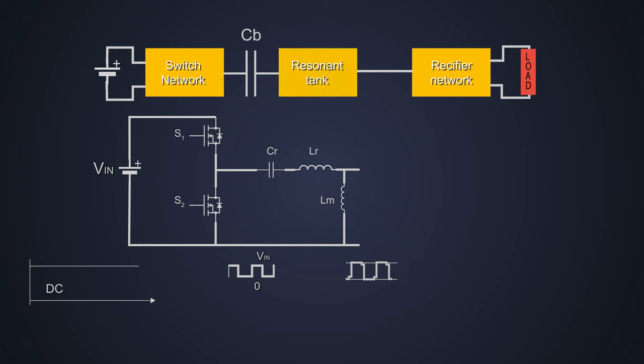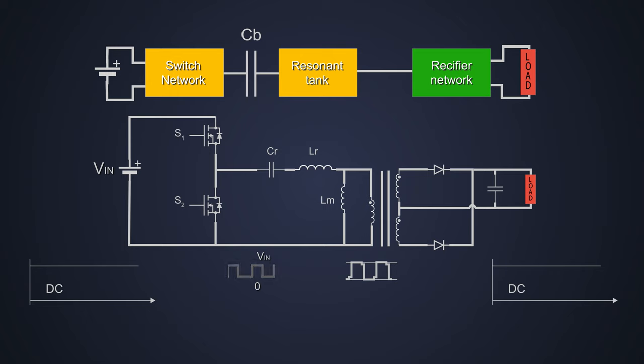After this, the resonant tank provides the signal to the rectifier which converts AC voltage signal into DC. And this is the basic block diagram of a resonant converter.